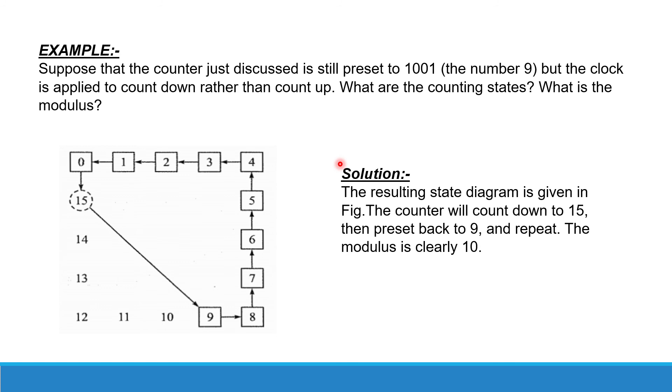Here I repeat the question again. Suppose that the counter just discussed is still preset to 1001, but the clock is applied to count down rather than count up. Now, the question is what are the counting states and what is the modulus?